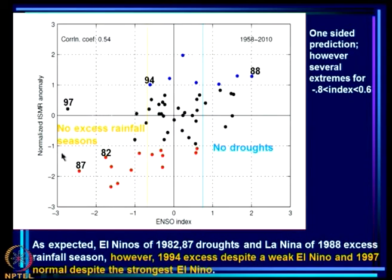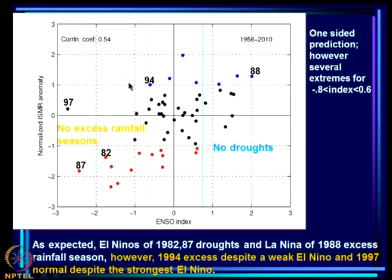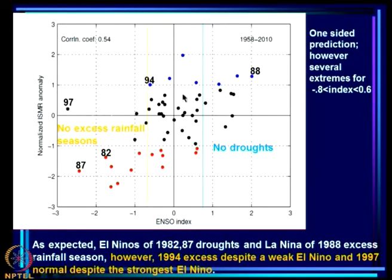Looking at normalized ISMR anomaly versus ENSO index: when the ENSO index is sufficiently favorable — around 0.8 — there are no droughts, and when sufficiently unfavorable, there are no excess rainfall seasons. One can get a one-sided prediction when the ENSO index is in those extreme ranges, but in between there are many years with both droughts and excess rainfall, and ENSO index alone cannot explain these extremes.